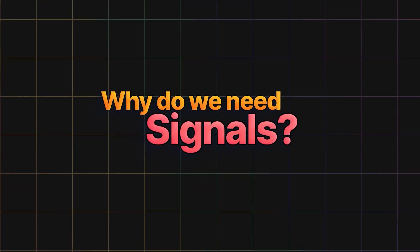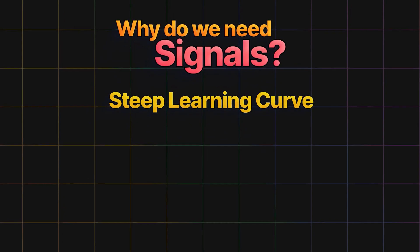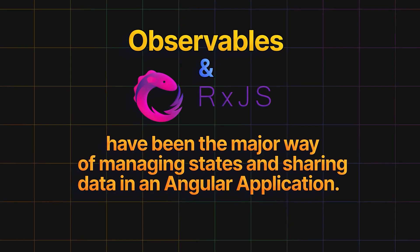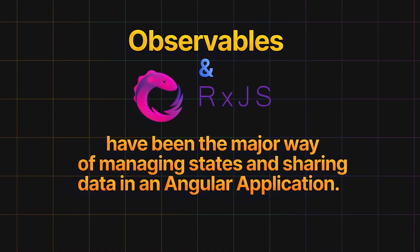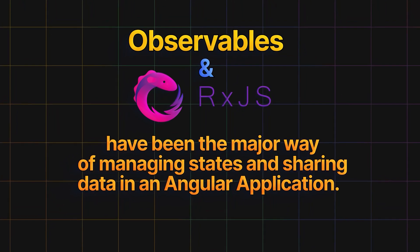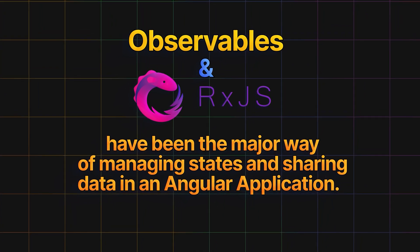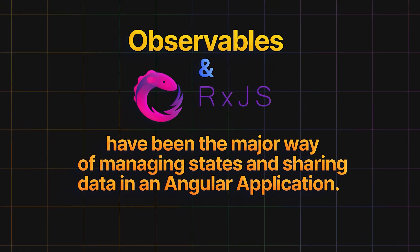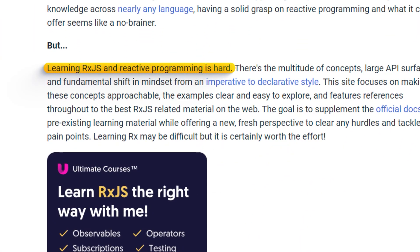Why do we need signals? The first point to highlight is the steep learning curve. Since the introduction of Angular in 2016, Observables and RxJS have been the major way of managing state and sharing data in an Angular application. Despite their huge capabilities and well-crafted design pattern, these technologies have made the learning curve for understanding Angular very steep — so much so that it is admitted as a fact on the RxJS website.